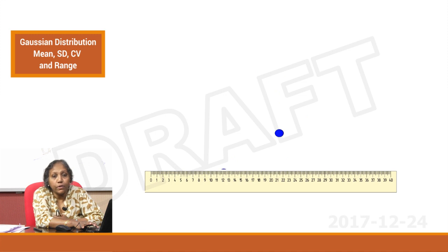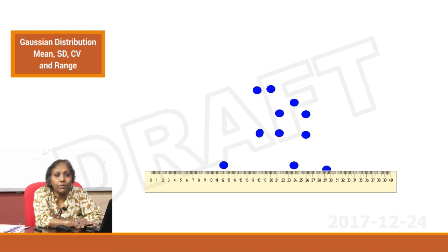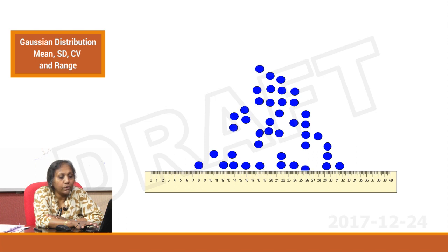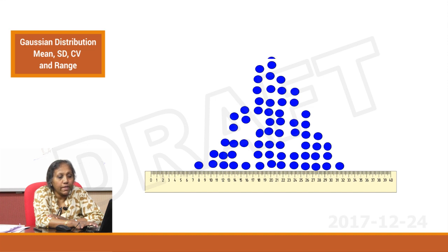Let us look at some data points — assume this is a repeated examination of a QC material over a period of time. Let us look at how the data points are going to fall as we continue to run the QC over a period of time. At the bottom is a ruler with graduations so that we can understand how the dispersion of these control materials is happening. Assume this is an analytical system, and see how the data points can be falling anywhere. Let us gather the data over a period of time and see how it is falling.